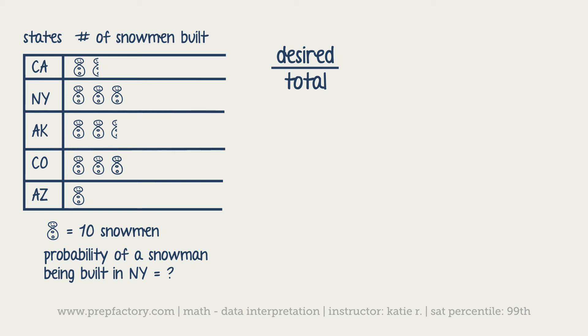We would look for New York. That's our desired, so that's three of these snowmen figures or 30 snowmen. Actually, you could just use three for that instead of 30, but they tell you there's 10 snowmen because they could also ask you something like what's the total number of snowmen in Colorado. There's 40 of them. So you have 30 over your total. That looks like one and a half snowmen, so we've got 15 plus 30 plus two and a half, so 25 plus 40 plus 10.